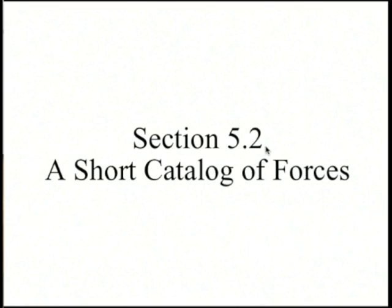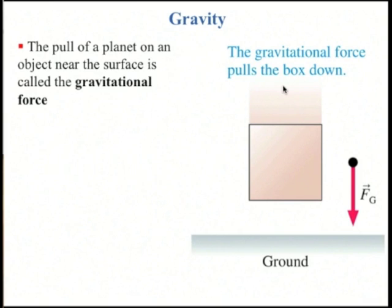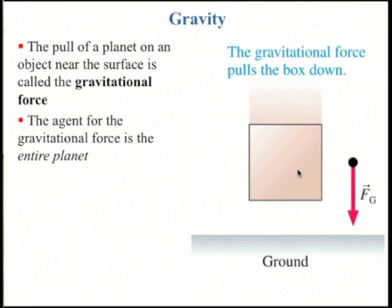Let's go through some of the forces that come up in this chapter and through the rest of the textbook. A very important force is gravity. The pull of any planet on an object near the surface of the planet is called the gravitational force. The agent for the gravity force is the entire planet — every mountain, ocean, and the iron core of the earth all contribute to the gravity force on this box.